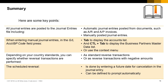Here are some key points to take away. All journal entries are posted to the journal entries file, including automatic journal entries posted from documents such as AR and AP invoices, and manually posted journal entries. When entering manual journal entries, in the GL account or BP code field press Tab to display the accounts list, or Ctrl+Tab to display the business partners master data list. Remember that you can enter the list of accounts or business partners from the context menu as well. Depending on your country standards, you can specify whether reversal transactions are performed as standard reverse transactions or as reverse transactions with negative amounts. The scheduled reversal is done by entering a future date for cancellation in the journal entry, and the cancellation transaction can be defined to prompt automatically.